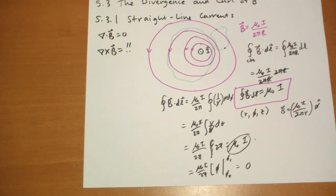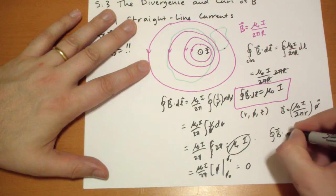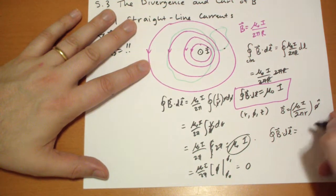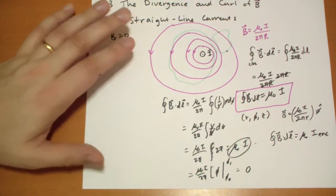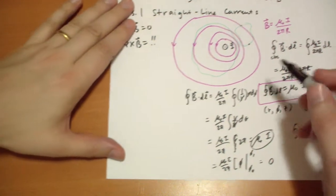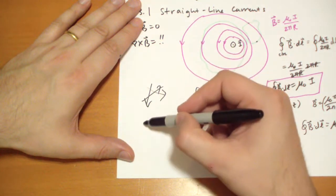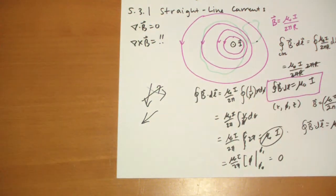So we have this general rule now that the closed path integral of B vector dot DL is equal to μ₀ times the current enclosed. And if you think about it, if we had a weird universe where we had currents flying all over the place, sometimes in opposite directions, you can use the principle of superposition because our B vectors follow the principle of superposition.